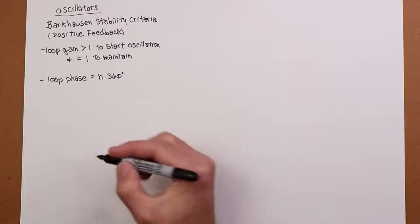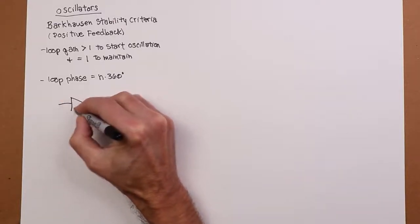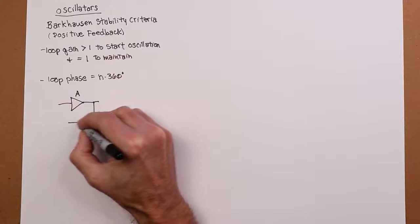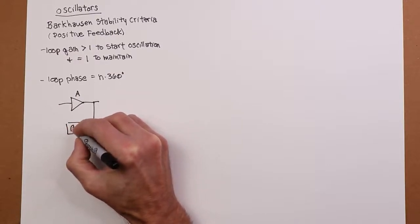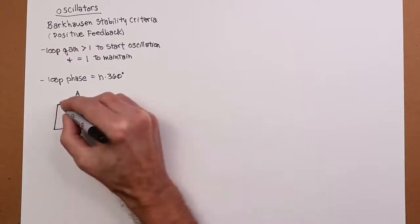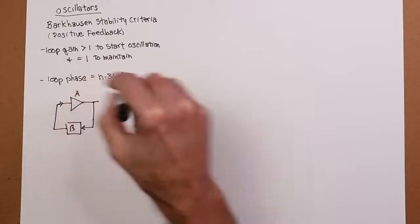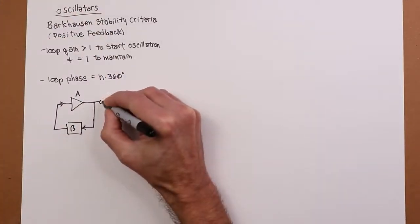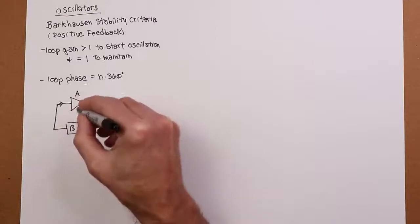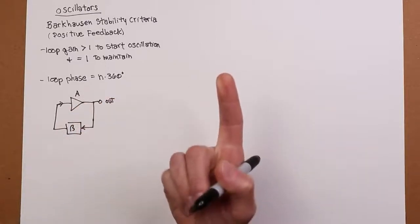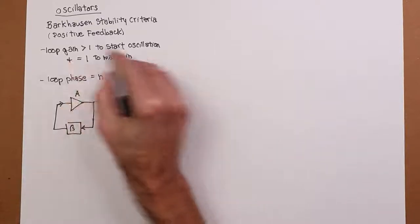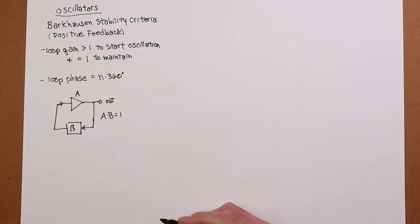So basically we have as a block diagram something like this. We have an amplifier, some kind of amplifying block A. And then there is a feedback block beta. So the input to this thing really is DC to the system is DC. And this would be our output over here. So we just say that A times beta, the loop gain, has to be one to maintain the oscillation. That's really what we're saying.